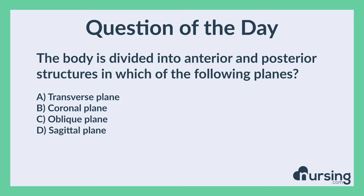Again, the body is divided into anterior and posterior structures in which of the following planes? A. Transverse plane. B. Coronal plane. C. Oblique plane. D. Sagittal plane. The correct answer is B.